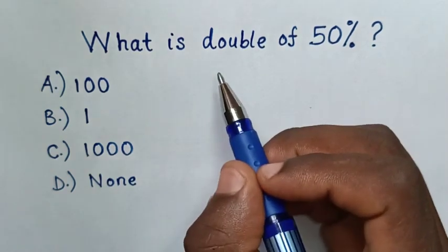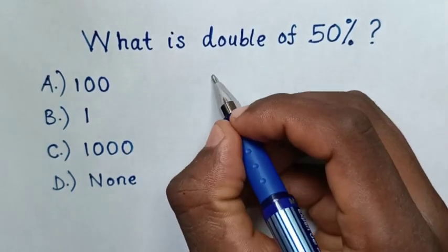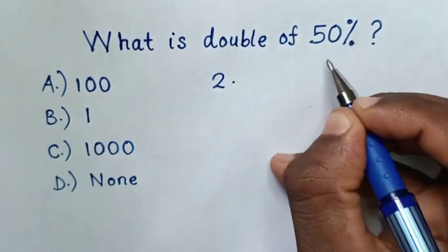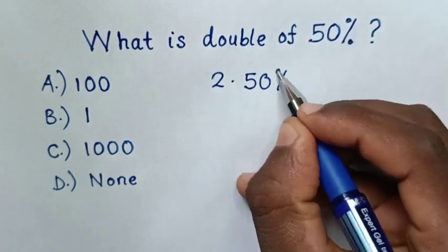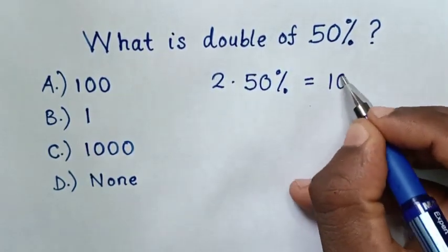So from our problem, double means 2, and of means times 50%. Then 2 times 50% is equal to 100%.